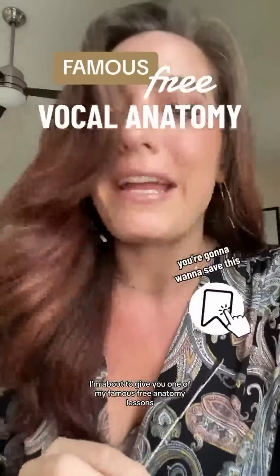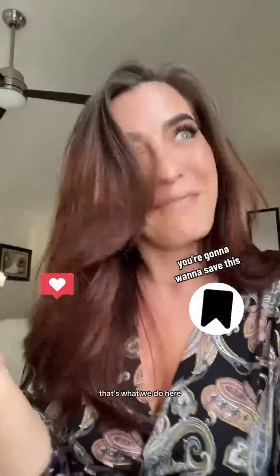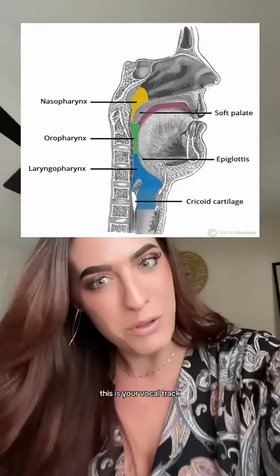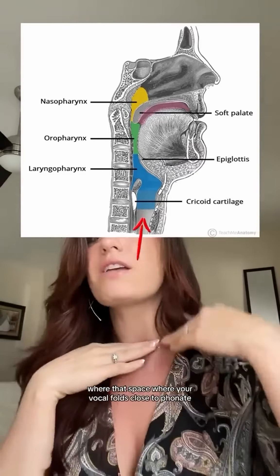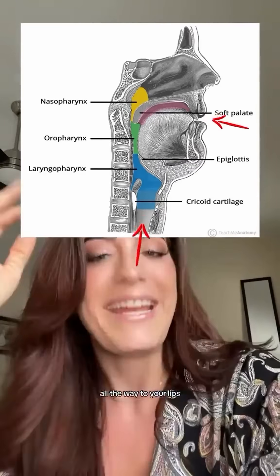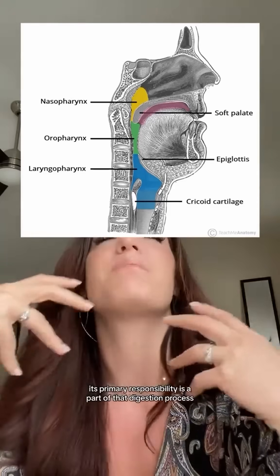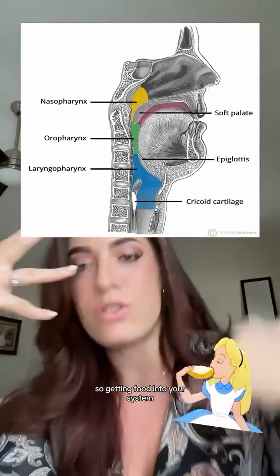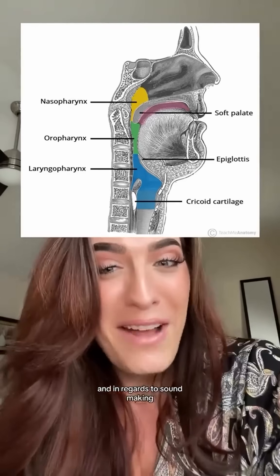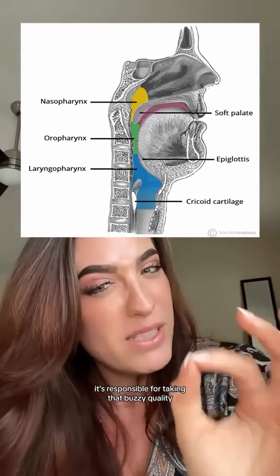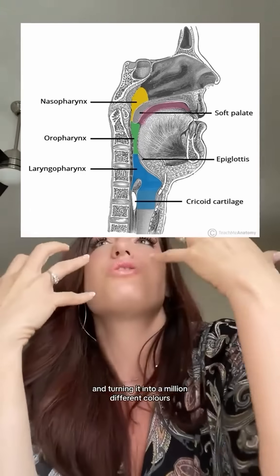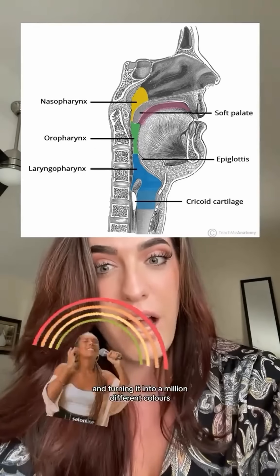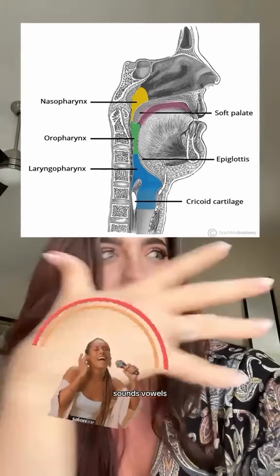I'm about to give you one of my famous free anatomy lessons — that's what we do here. This is your vocal tract. It goes from the glottis, that space where your vocal folds close to phonate, all the way to your lips. Its primary responsibility is part of the digestion process — getting food into your system — but in regards to sound making, it's responsible for taking that buzzy quality happening at the vocal fold level and turning it into a million different colors.